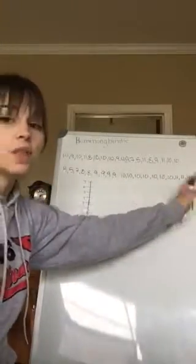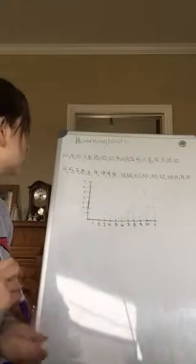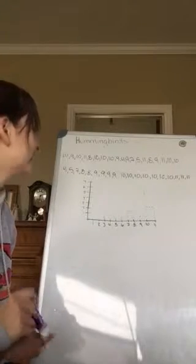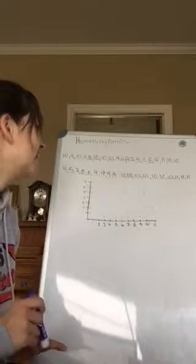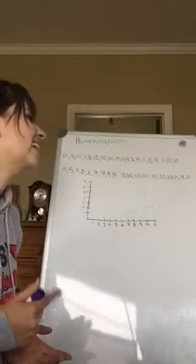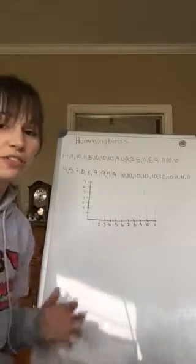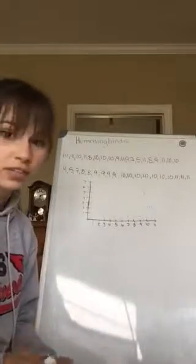So our values are 4 ounces, 5, 7, 8, 8, 9, 9, 9, 10, 10, 10, 10, 10, 10, 10, 11, 11, 11. So that's a total of the 19 hummingbird different weights.